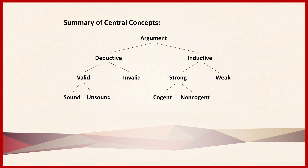An unsound valid argument is one in which at least one premise is false. Inductive arguments, we say, are either strong or weak. A strong inductive argument is one in which the evidence presented in the premises provides sufficient reason for us to believe the conclusion. A cogent strong argument is a strong argument which has all true premises. A non-cogent strong argument has at least one false premise. The rest of the semester, and the rest of this text, will concern how to apply these various concepts.